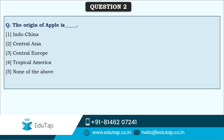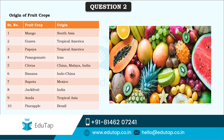The next question: the origin of apple is Central Asia. Each fruit originated in one area of the world and later spread to other regions where climatic and soil conditions were suitable. Mango originated in South Asia, guava in tropical America, papaya in tropical America, pomegranate in Iran, citrus in China, Malaya, and India, banana in Indo-China, sapota in Mexico, jackfruit in India, amla in tropical Asia, and pineapple in Brazil.